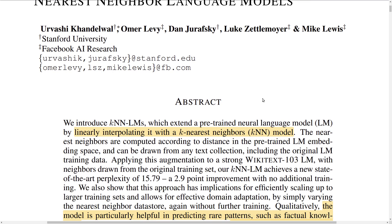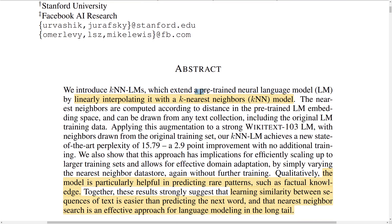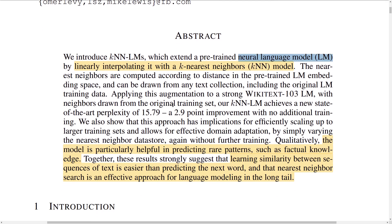The paper introduces a new type of language model called K-Nearest Neighbor Language Models. The basic idea is to combine a standard pre-trained language model with a K-nearest neighbor search model, which searches for similar texts in the training dataset or in a different additional dataset. The KNN component converts the search results into a probability distribution over the next word, which is then combined with the language model's probability distribution.